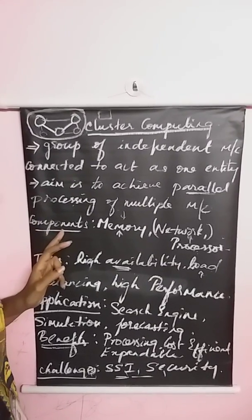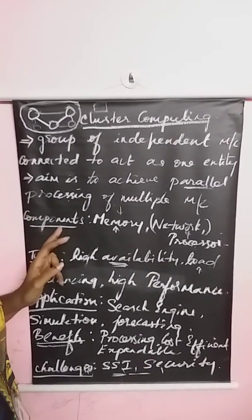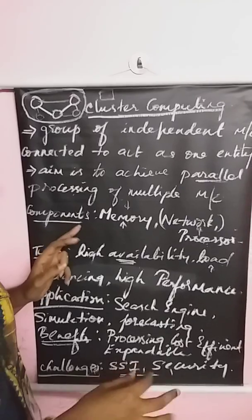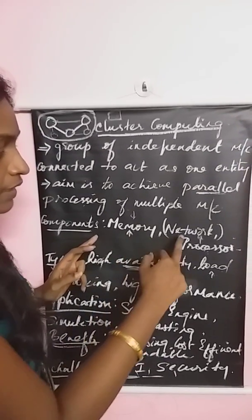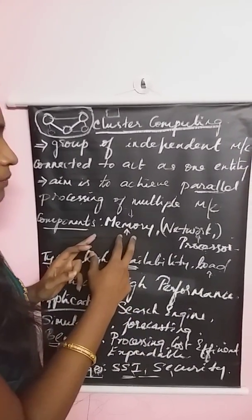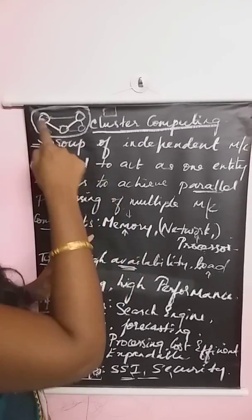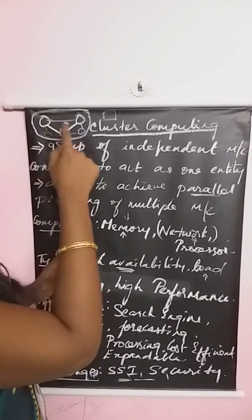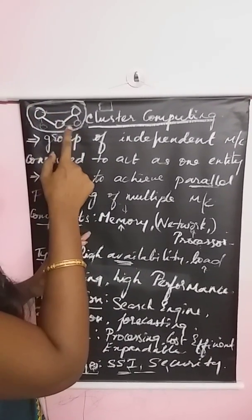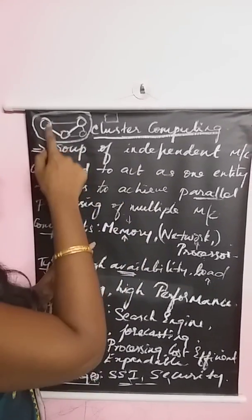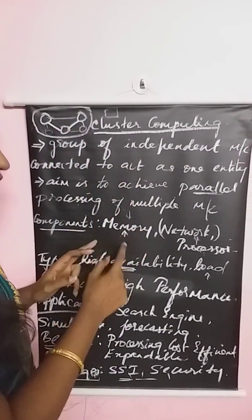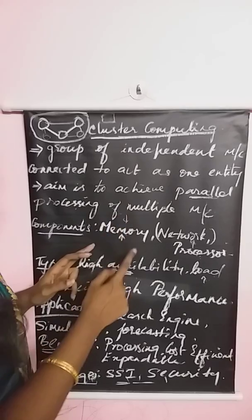Regarding the components of cluster computing, there are three main components: memory, network, and processor. For memory, since every independent machine is interconnected to form one single entity, the memory of these independent machines is combined together and serves as one single memory.